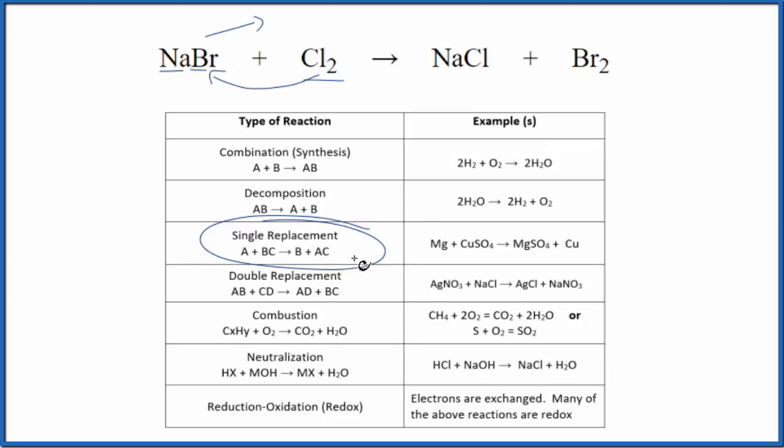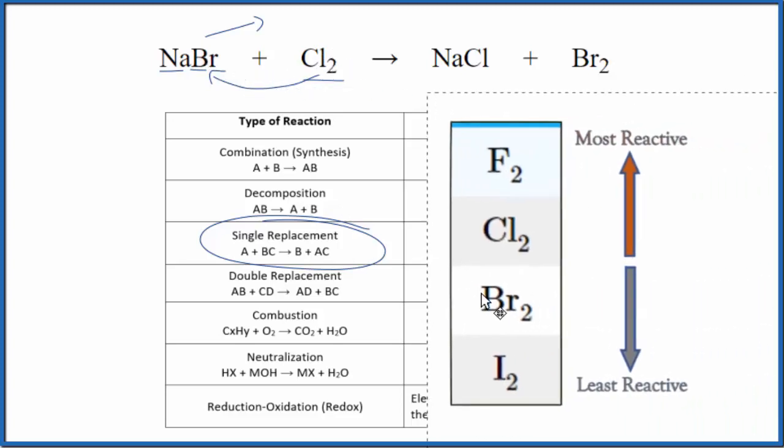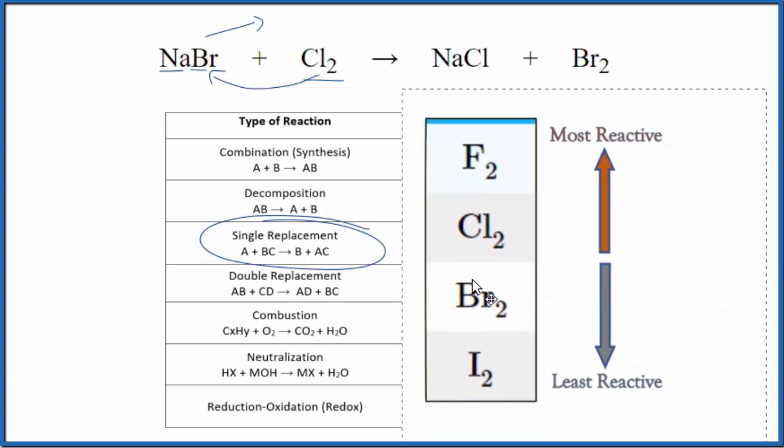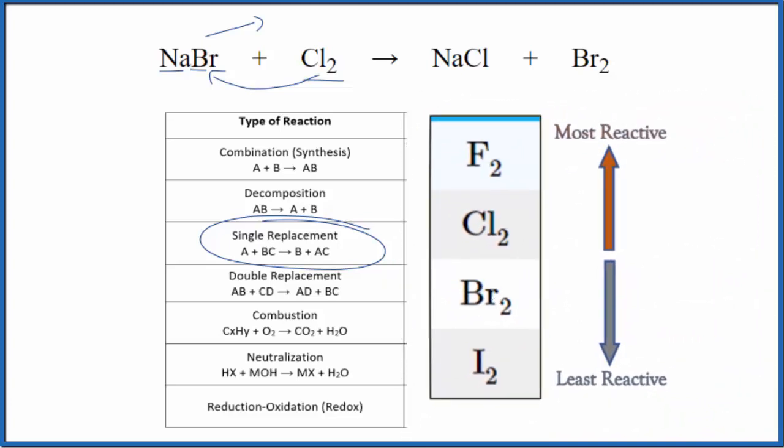With single replacement reactions, we need to see if the chlorine is active or reactive enough to push the bromine out. So we can look at this chart here, the activity series for the halogens, that's group 17 or 7A.